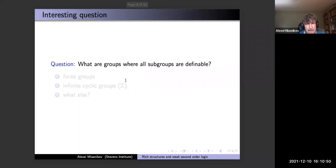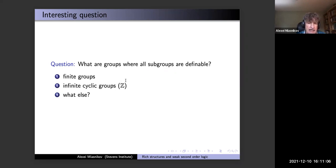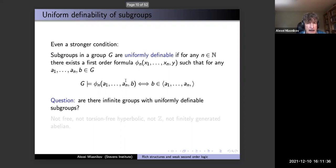If you start thinking about it, the first question you might ask yourself is: what is on the other side of the spectrum — what are groups where all subgroups are definable? Obviously finite groups are like that. Infinite cyclic groups are also like that: for example, the subgroup generated by 5 is defined by the formula that x is y + y + y + y + y (five times), i.e., there exists y such that x = 5y.